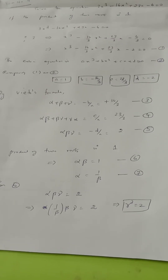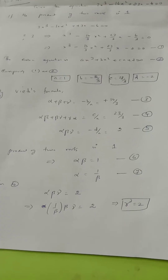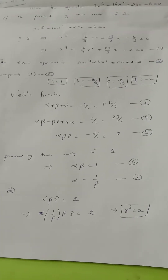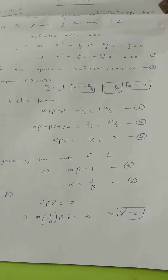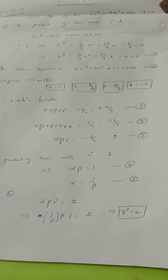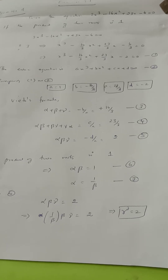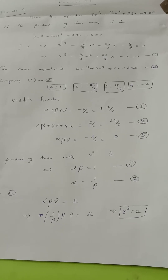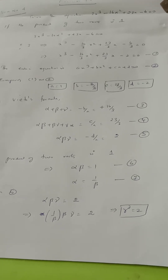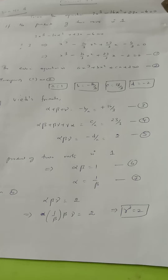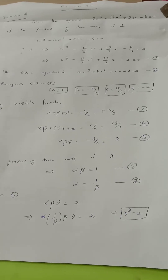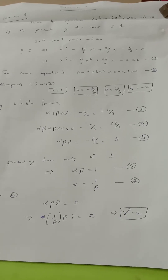Solve the equation 3x cubed minus 16x squared plus 23x minus 6 equal to 0, given that the product of 2 roots is 1 and the sum of 2 roots is 1.